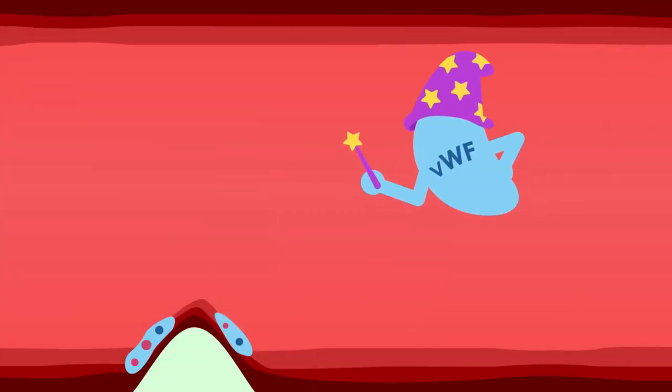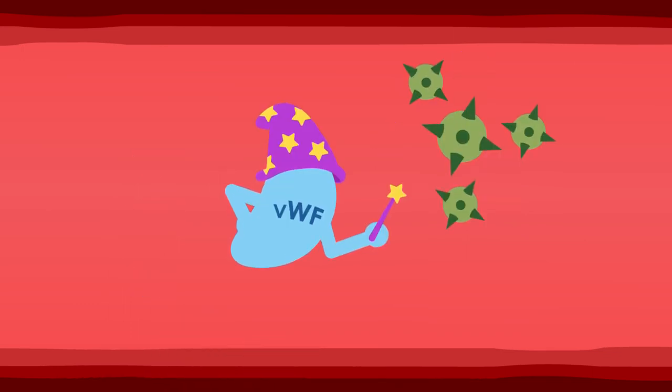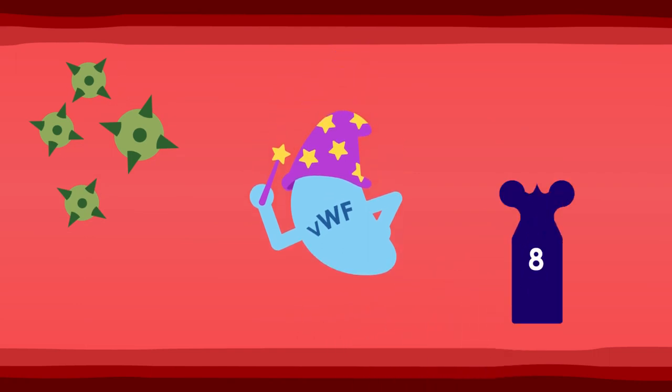Von Willebrand factor, or VWF, helps to develop platelet plugs, and it also helps protect inactive factor VIII proteins as they float through the bloodstream waiting to be called into work.